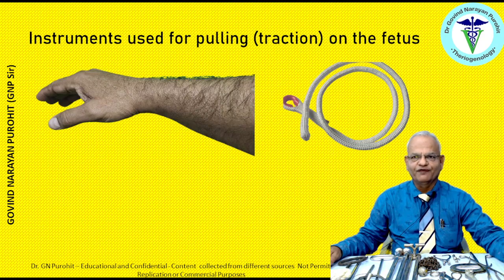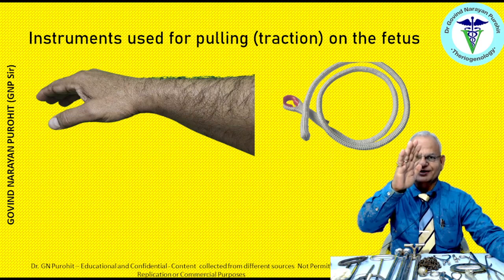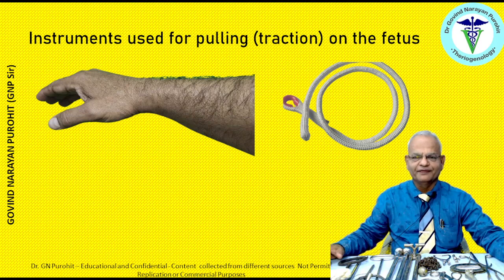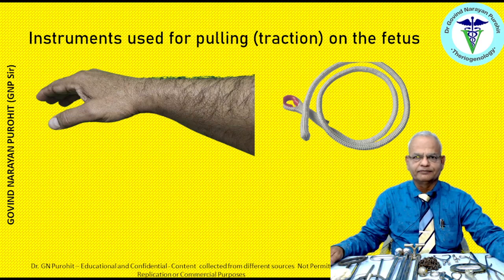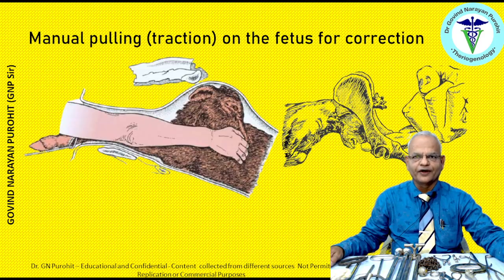The first and most important instrument which every one of you has is your hand. You can use your hand in obstetrics for manipulations during delivery. The second easily available instrument is the rope. I will show you how you can use your hand for correcting the fetal orientation, fetal position, and posture during obstetric operations. You can use your hand for manual pulling of the fetus.